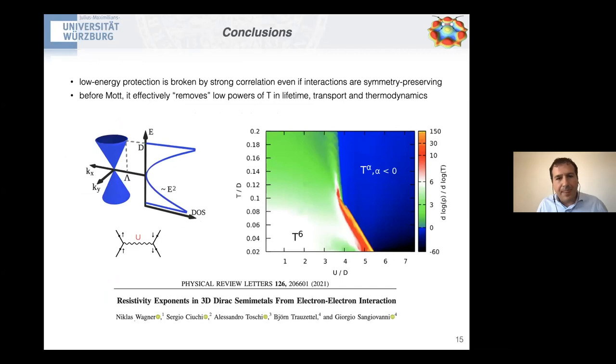So that's my conclusion slide. I showed that we can break this low energy protection by going to strong coupling, even if the interaction is a symmetry preserving perturbation. But the interesting thing is that before the Mott transition, we effectively remove a lot of low powers in the temperatures. And this shows up in lifetime, transport and thermodynamics. Thank you very much.